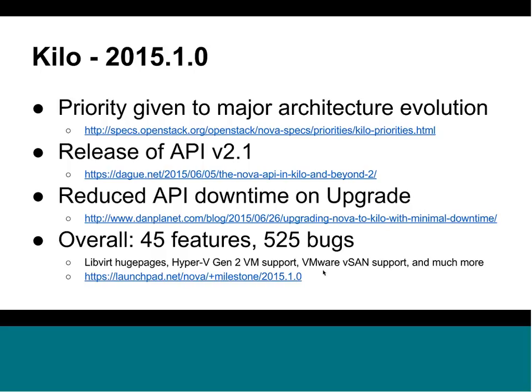Another priority for Nova in Kilo is the API v2.1. We need a way to evolve our API that makes it good and discoverable for users, and also easier for developers to evolve without friction. After a lot of hard work, we've come up with the idea of micro versions and v2.1. From a user perspective, you can detect if the system has a new API, and you can also isolate yourself from changes by requesting a specific version — keeping on a stable version while the system evolves.